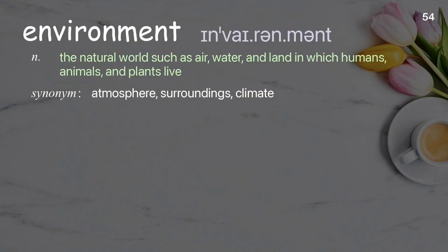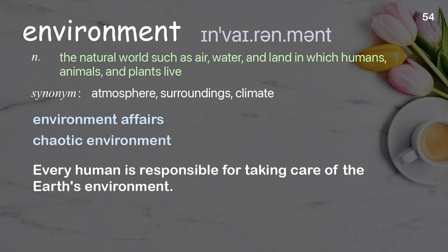Environment. The natural world such as air, water, and land in which humans, animals, and plants live. Examples: environment affairs, chaotic environment. Every human is responsible for taking care of the Earth's environment.